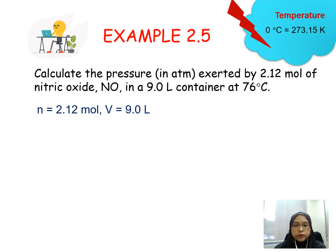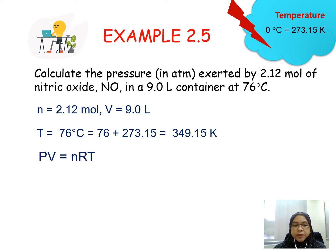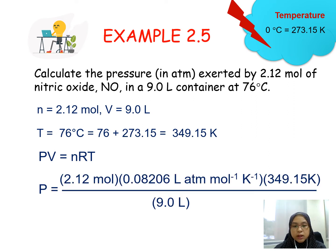Remember you have to convert the temperature 76 degrees Celsius to kelvin by adding 273.15, which gives 349.15 kelvin. Next we use the PV equals to nRT ideal gas equation. Substituting all the values gives us the answer 6.749 atm.